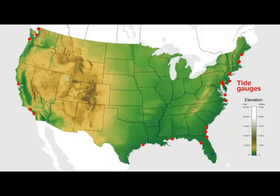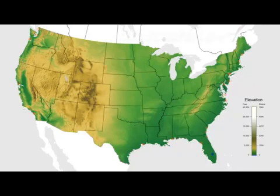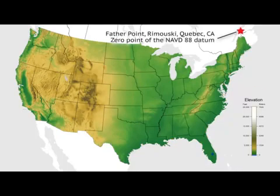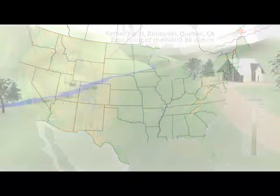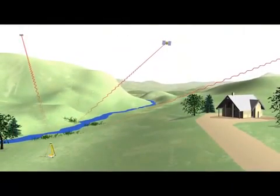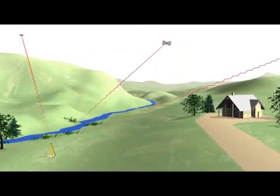Most vertical datums in North America use sea level as the basic reference plane from which we measure elevation changes. Because sea level varies along the coast for a variety of reasons, the idea of using multiple tide gauges to define the vertical datum was abandoned in 1988, in favor of using just one tide gauge. Now, thanks to the global positioning system, commonly known as GPS, and some other space age techniques,